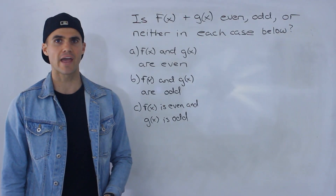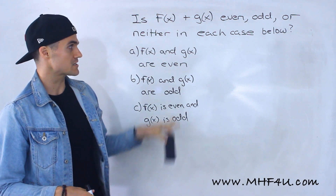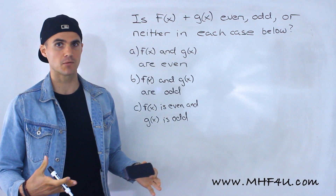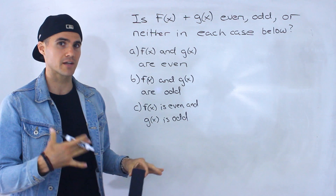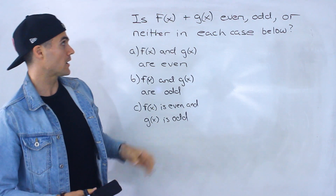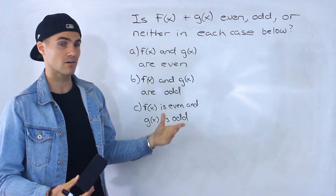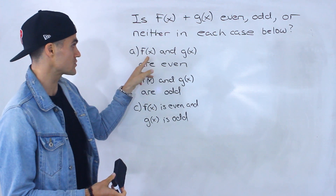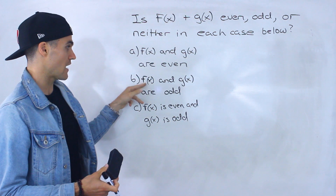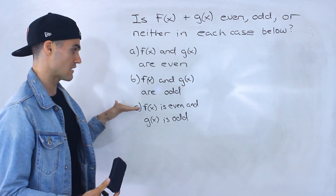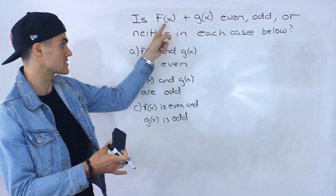Welcome back. Moving on to another example dealing with symmetry. This is a pretty popular question that can come up on tests and it's one that can confuse students a little bit. What they're asking is: is f of x plus g of x even, odd, or neither in each of these cases — if both are even, both are odd, or one is even and one is odd.